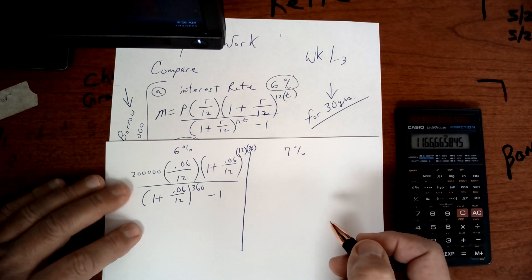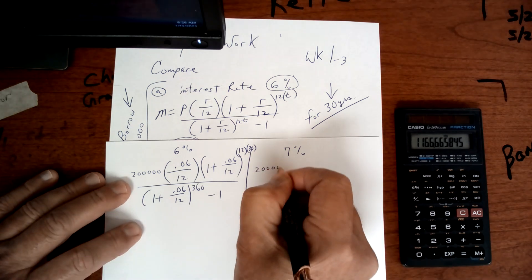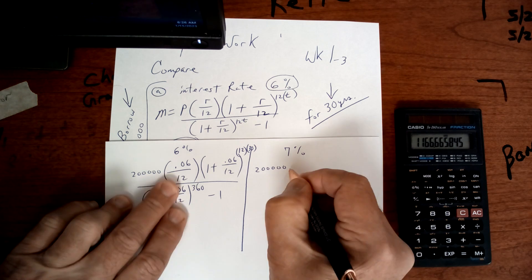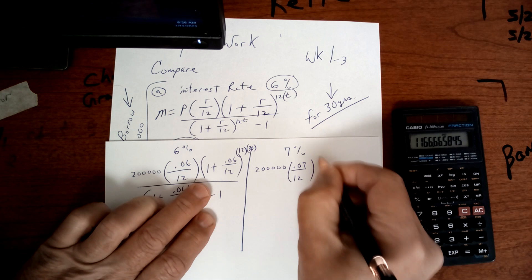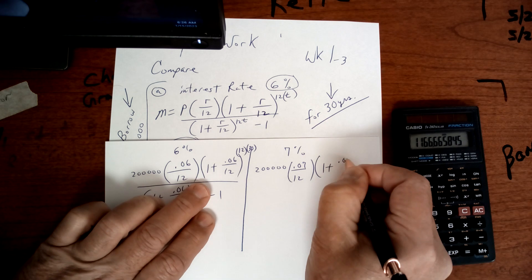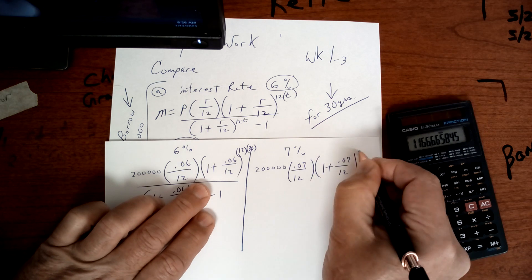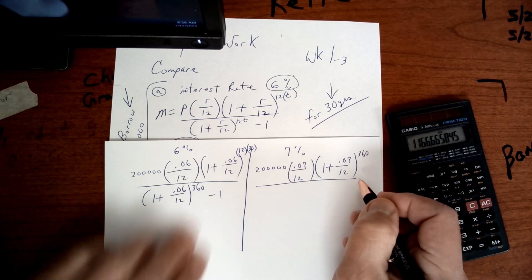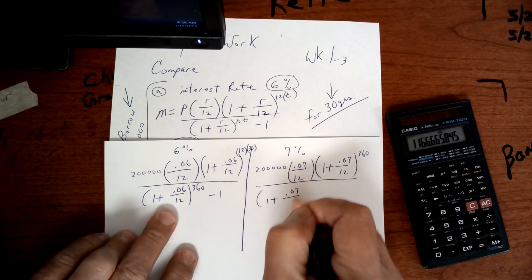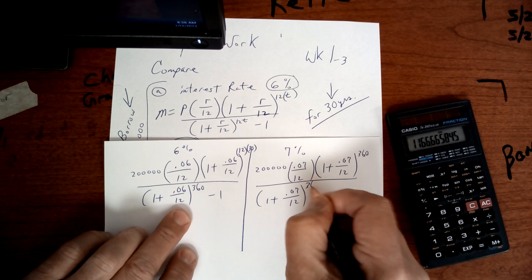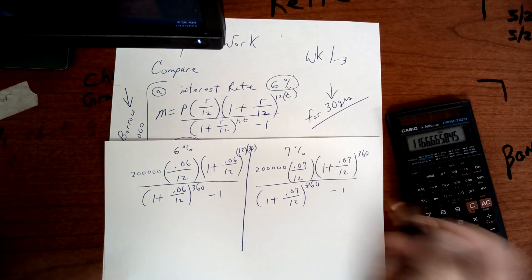Over here it's going to be 200,000 times .07, 1 plus .07 divided by 12 to the 360th power, all divided by 1 plus .07 divided by 12 to the 360th power minus 1. And that's what we want